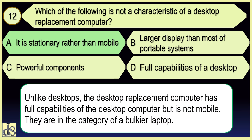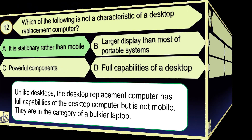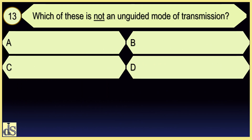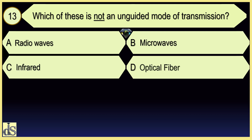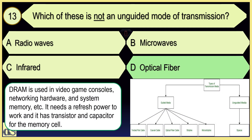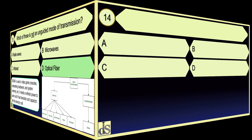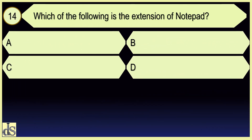It is a stationary rather than mobile. Which of these is not an unguided mode of transmission? Optical fiber.